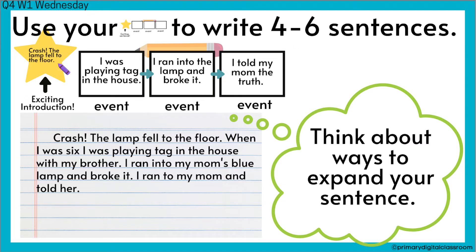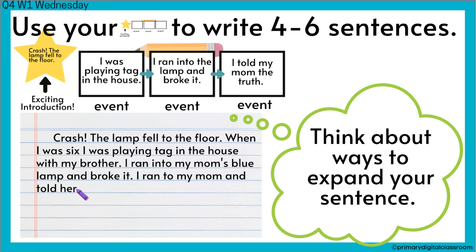On Wednesday, you're taking that flow map and turning it into a paragraph. You want to think about ways to expand your sentences. Up here I said I was playing tag in the house, but down here I expanded it — I made it bigger and better. I said when I was six, I was playing tag in the house with my brother. Up here I said I ran into a lamp and broke it; down here I put I ran into my mom's blue lamp and broke it. And then up here I said I told my mom the truth; down here I said I ran to my mom and told her.